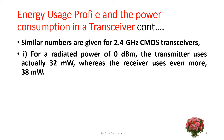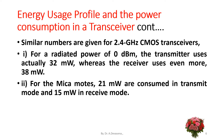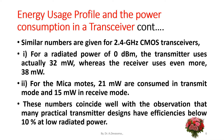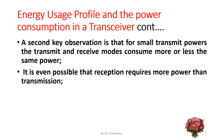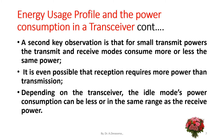For a radiated power of 0 dBm, the transmitter uses 32 mW whereas the receiver uses even more — 38 mW. For microcontroller modes, 21 mW are consumed in transmit mode and 15 mW in receive mode. These numbers coincide with the observation that many practical transmitter designs have efficiencies below 10% at low radiated power. A second key observation is that for small transmit powers, the transmit and receive modes consume more or less the same power. It is even possible that reception requires more power than transmission.